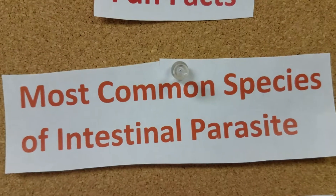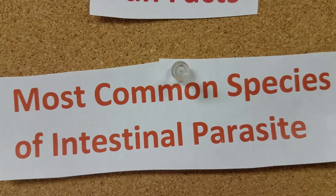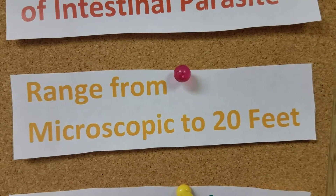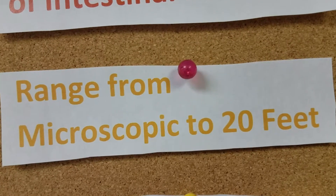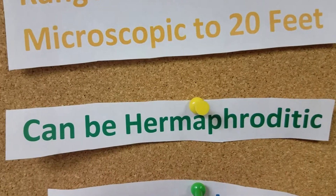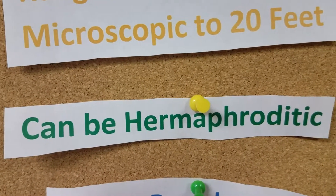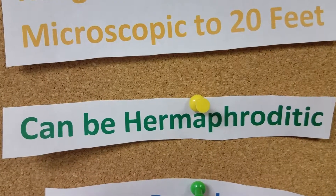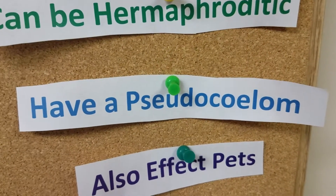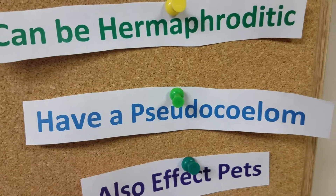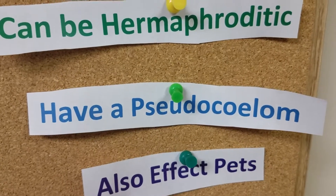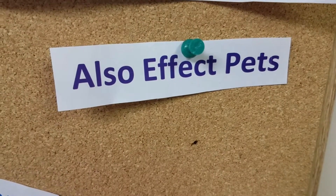And now for some fun facts. The human roundworm is the most common species of internal intestinal parasites. They can range from microscopic to 20 feet long. They also can be hermaphroditic, which means they can have both the male and female reproductive organs. They also have a pseudocoelom, which means that unlike a normal coelom, the placement of it is different, but it serves the same purpose. And they can also affect pets as well as humans.